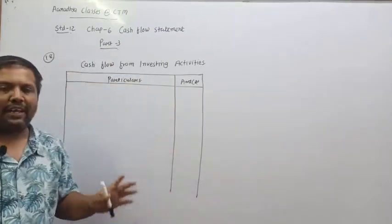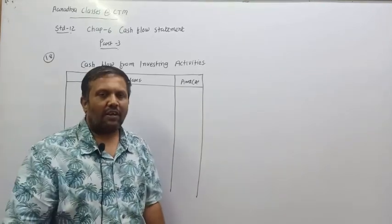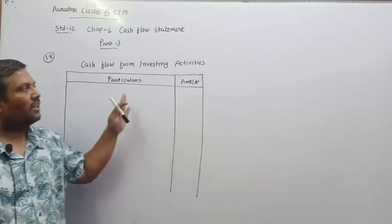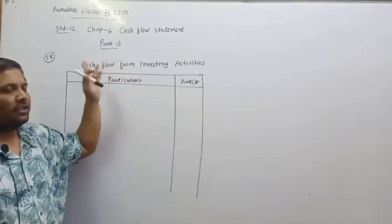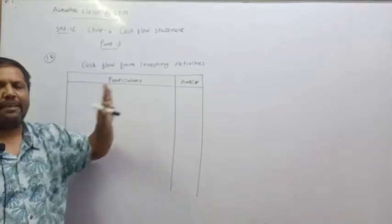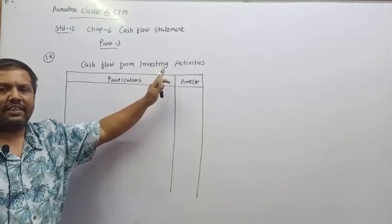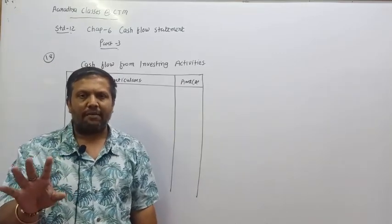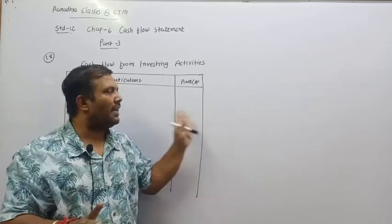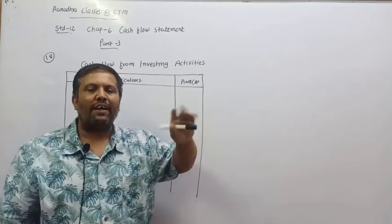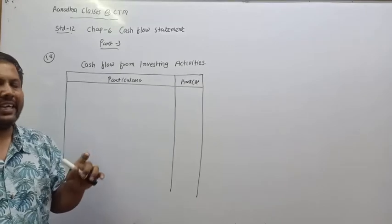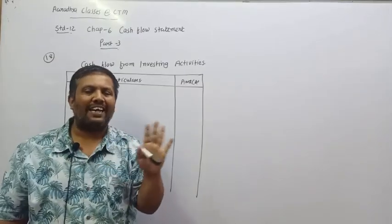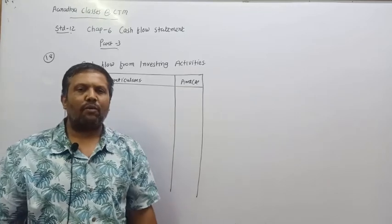Starting cash flow from investing activity. Textbook sum number 18. Today I will complete all the investing activity sums from the exercise — there are two sums plus illustrations, three in total, and I will complete all of them. Basically, the investing activity heading tells you which activity's sum to do. Read the question and determine if each item is inflow or outflow.